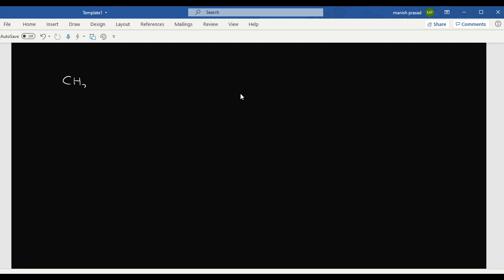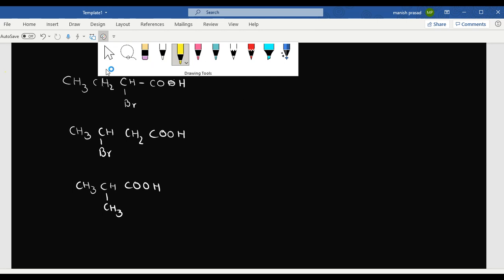We have our CH3-CH2-CH with a Br and we have a COOH. That's the first one. Then the second one we have CH3-CHBr and then a CH2 and a COOH. And the third one we have CH3-CH-CH3 and a COOH. Now guys, bromine is an electron withdrawing group.